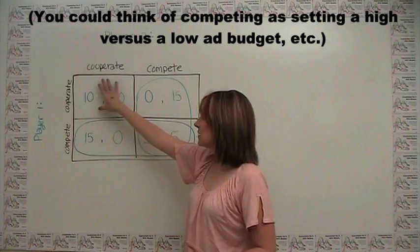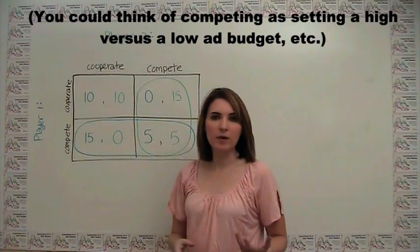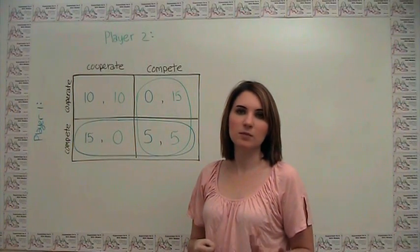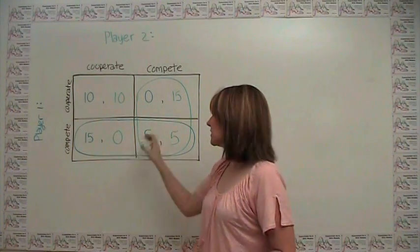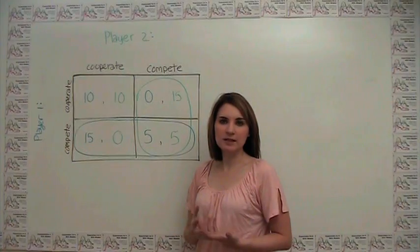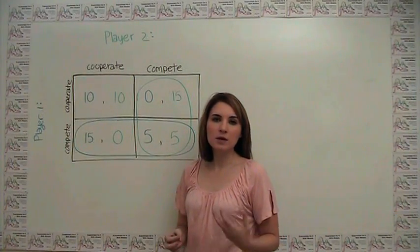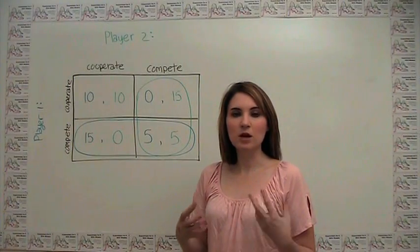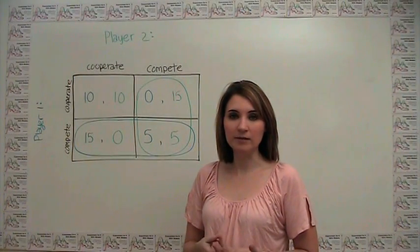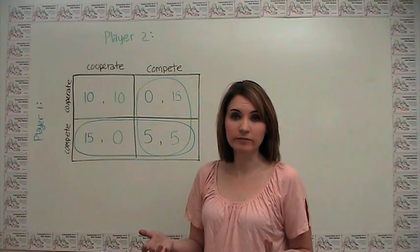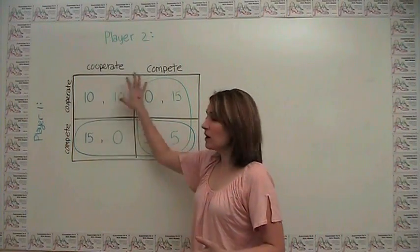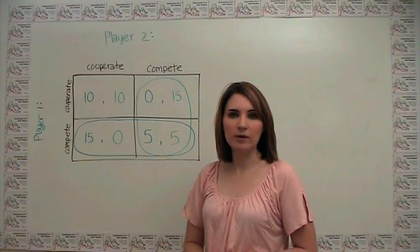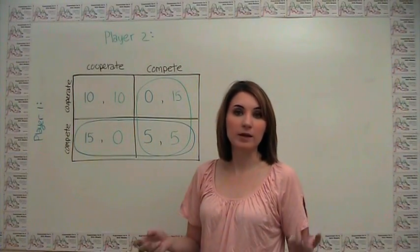And you can see here, they both do better off by cooperating, but they also all have the private incentive to compete. And you can notice here that this situation is actually pretty realistic, because at least in the United States, firms are not allowed to contract on whether or not they're going to cooperate. That's called collusion. It's illegal. So they really are simultaneously making independent choices as to how much to cooperate with their quote-unquote competitors.